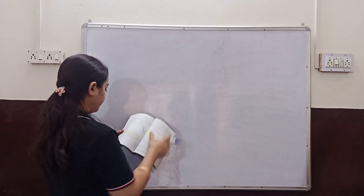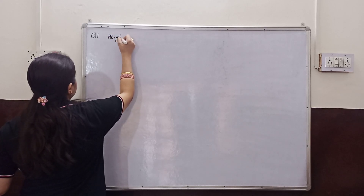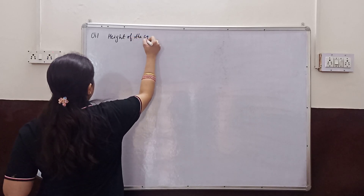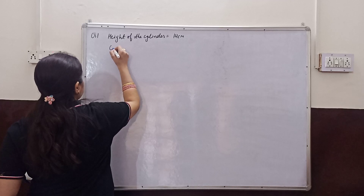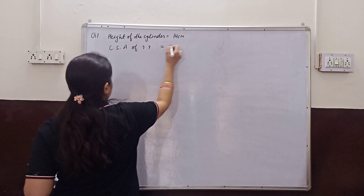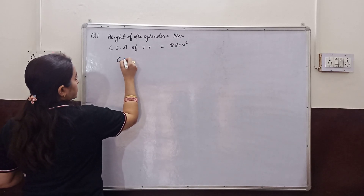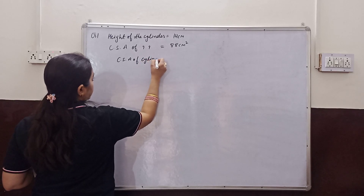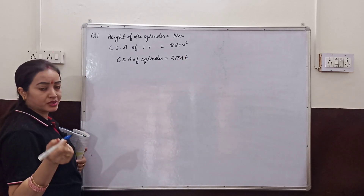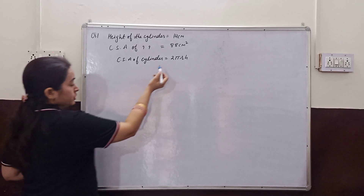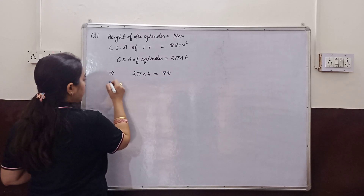Let's write the question. Question number 1. The height of the cylinder is 14 cm. The curved surface area of the cylinder is 88 cm². You have to find the diameter. We will write: CSA of cylinder is equal to 2πrh. So 2πrh is equal to 88 — that is given.